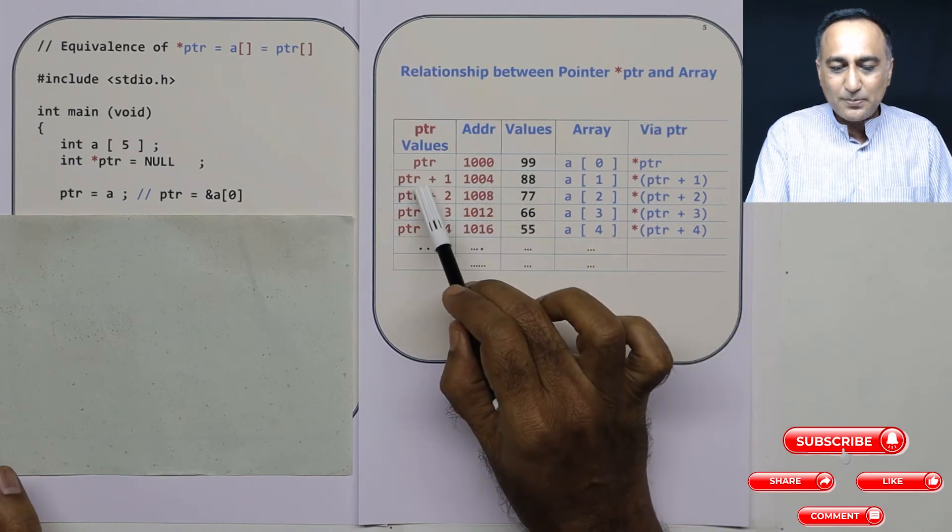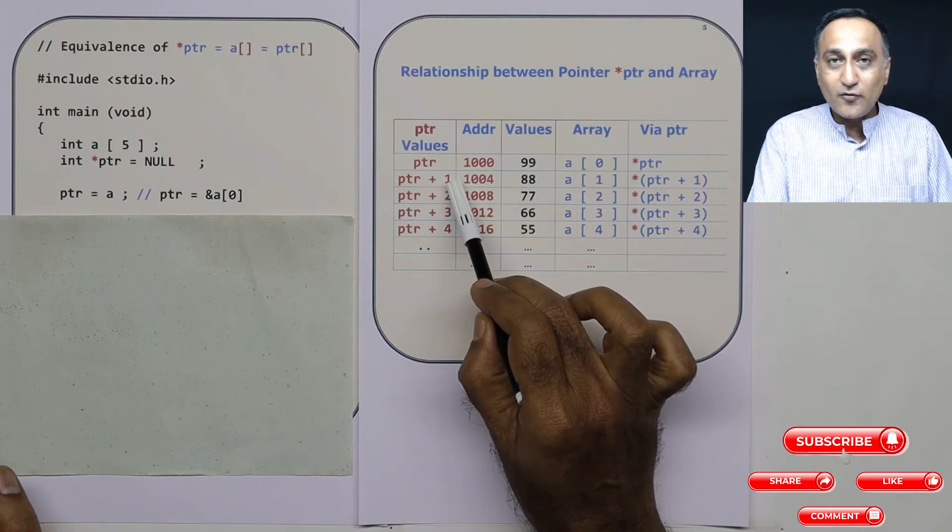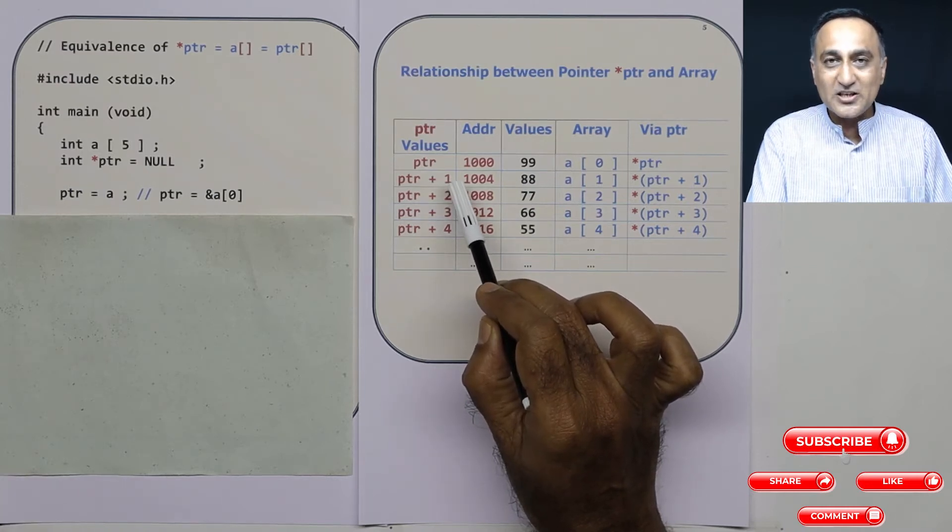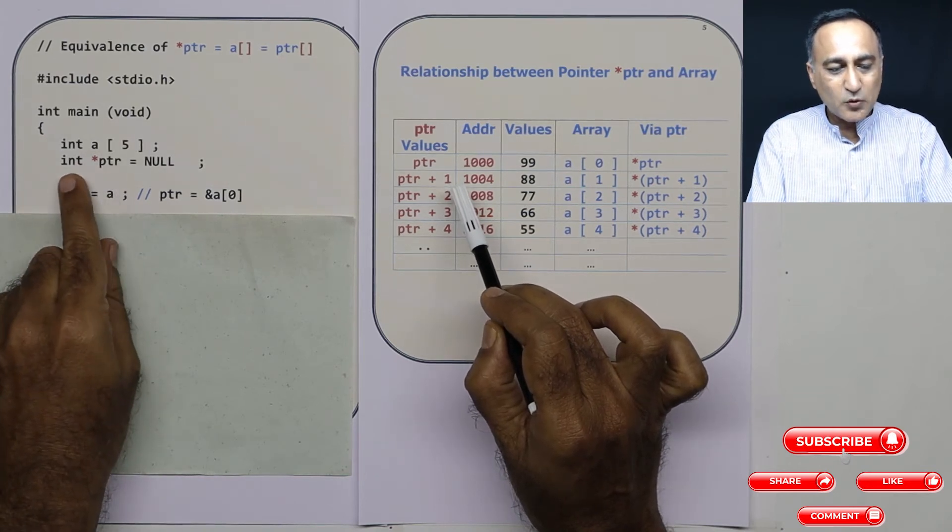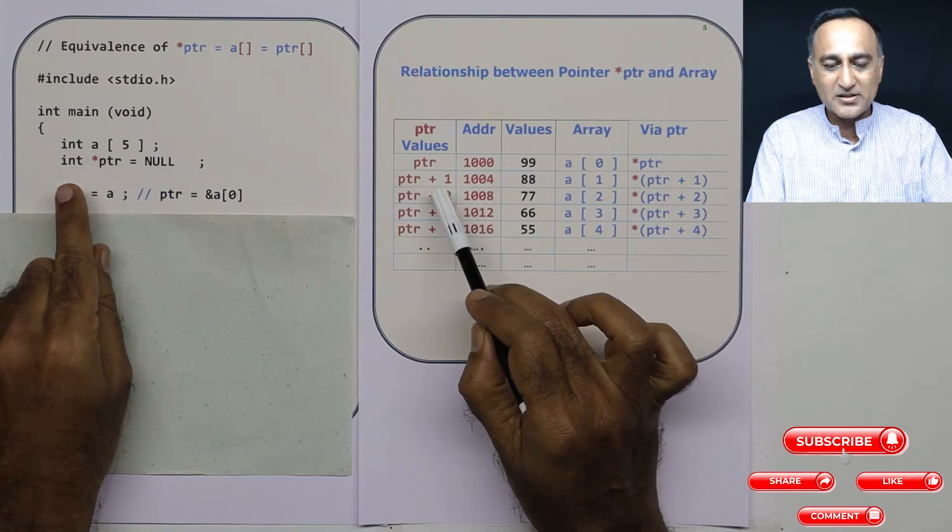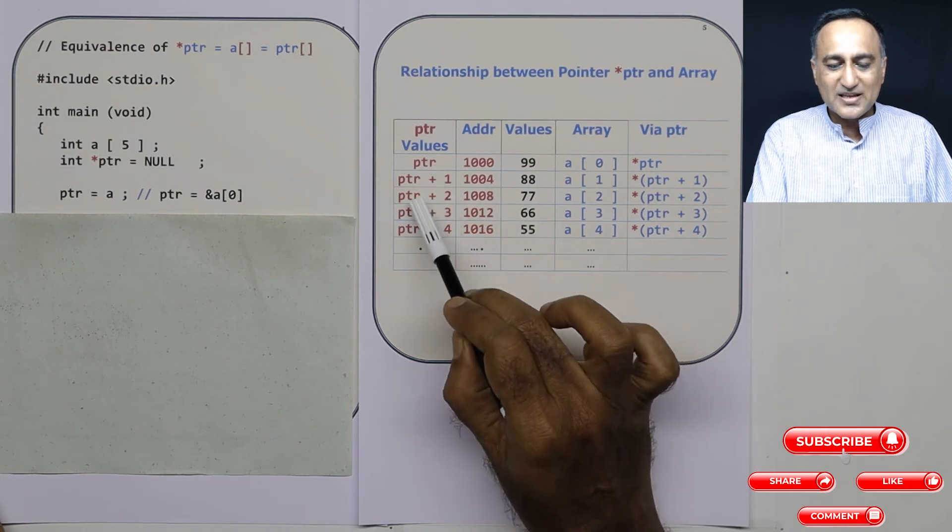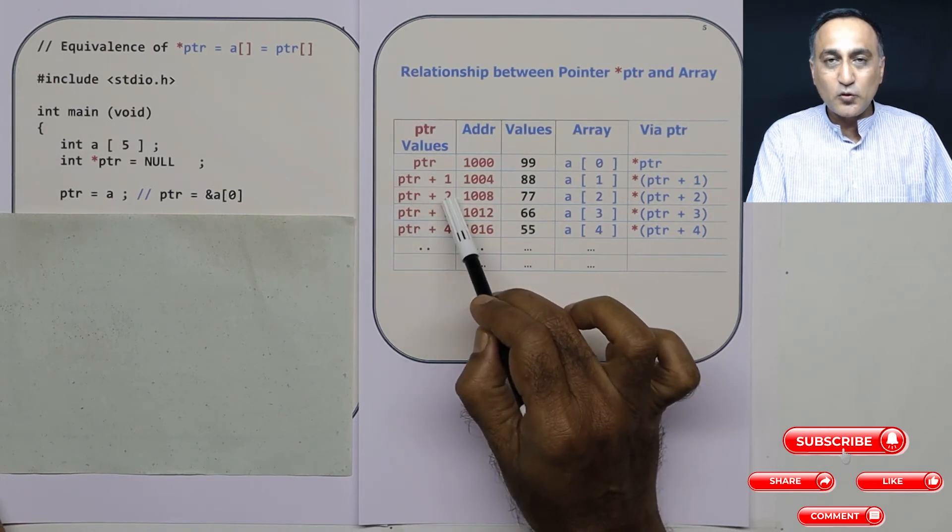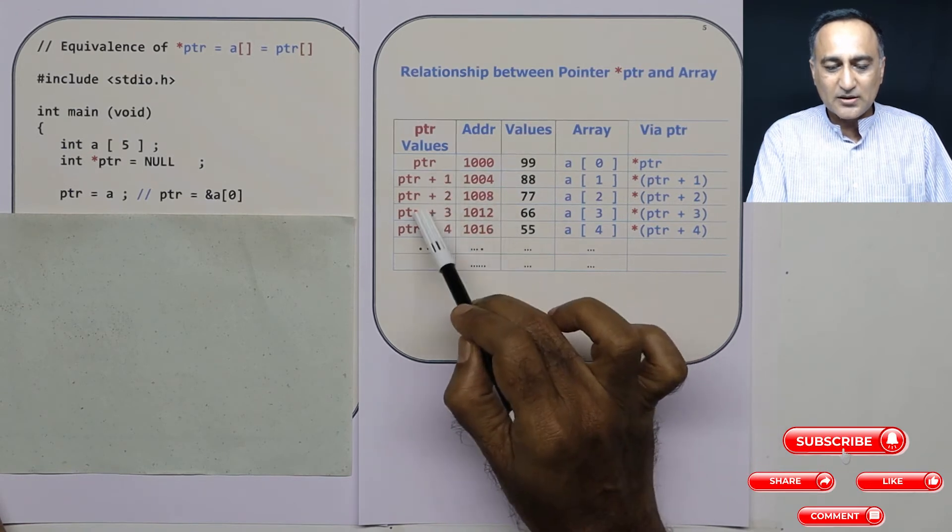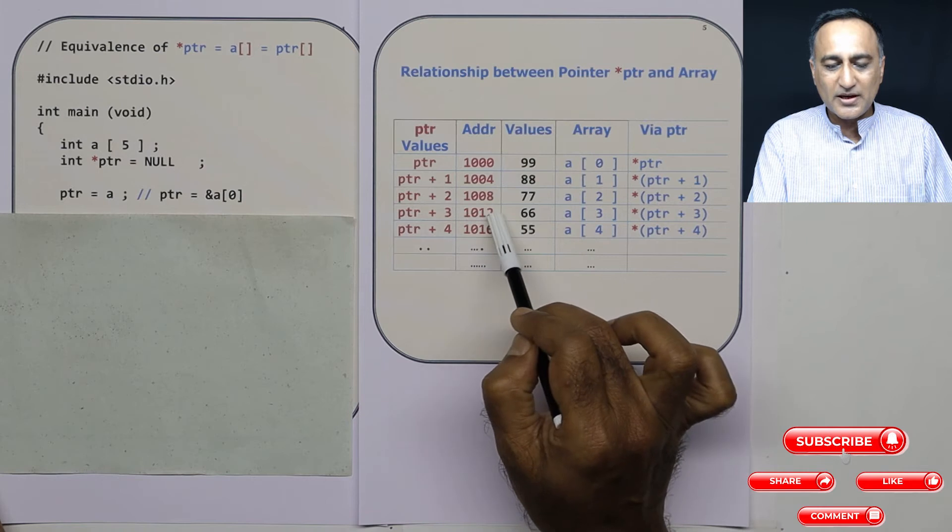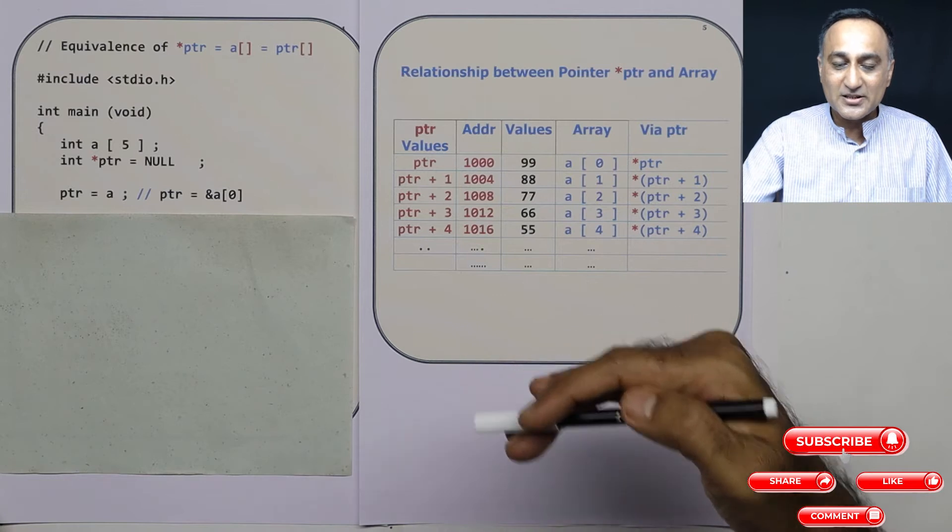Similarly, when I say ptr plus 1, this 1 is going to be 1 into 4 because I am assuming 4 to be the size of integer type of data, because ptr is a pointer to an integer and integers occupy 4 bytes. So when I say ptr plus 1 it is referring to 1004. ptr is again 1000, 1000 plus 2 into 4 is 8, so it is referring to 1008. ptr is 1000, 1000 plus 3 into 4 is 1012. So this way using ptr I can travel into different addresses of the array.